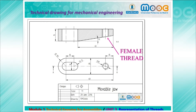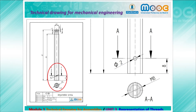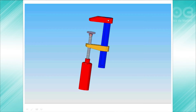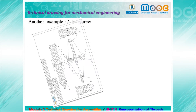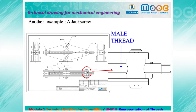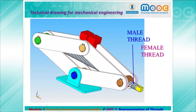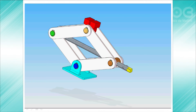Here you see the movable jaw, which has a female thread with the nominal diameter dimension. The adjustable screw has the male thread, and you see the representation. We see how the clamp works — it is the thread that makes the clamp work. Another example is a jack screw; here you have the detail of the two parts threaded — the male thread and the female thread. This makes the jack screw work; I am sure you all have a jack screw in your car.